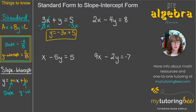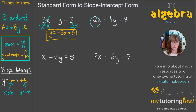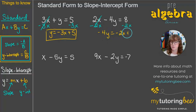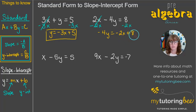Let's try our second problem: 2X minus 4Y equals 8. Again, we're going to start with that X term — we want to get rid of it by subtracting it entirely from the left-hand side. That leaves us with negative 4Y equals negative 2X plus 8, set up with the X term first and then the constant.